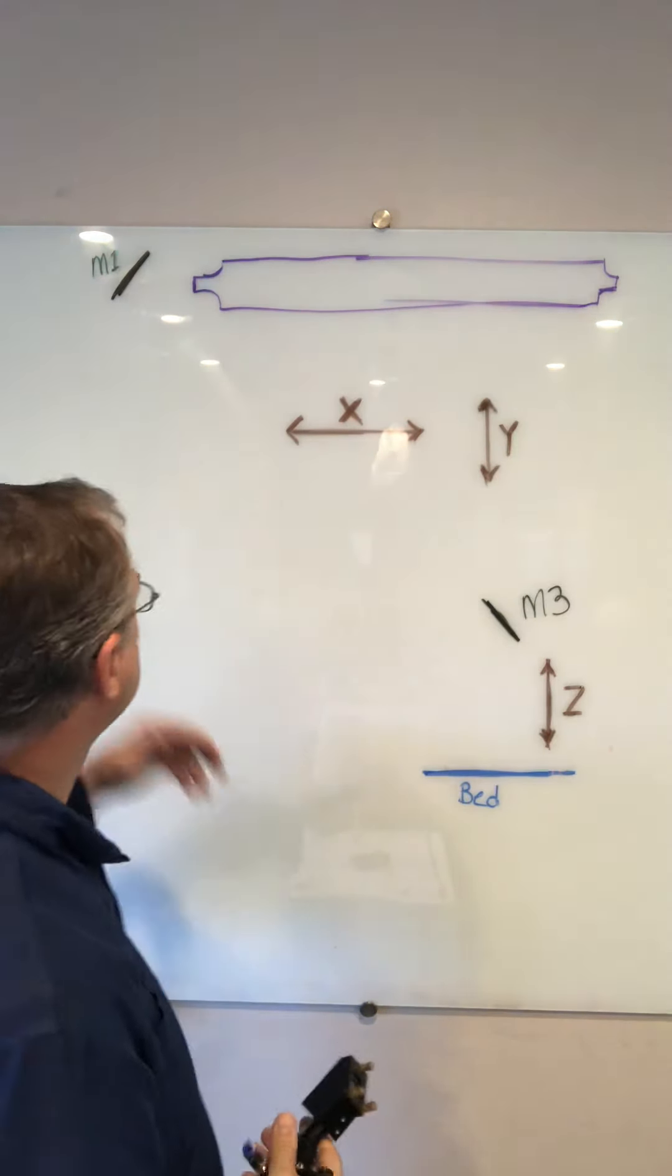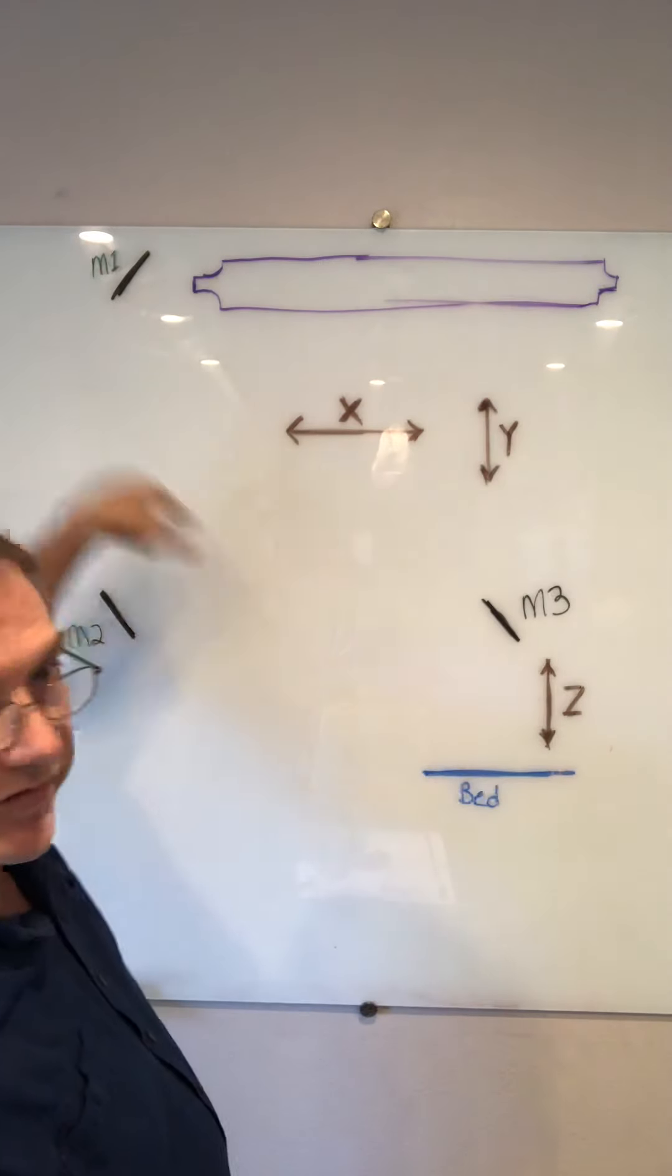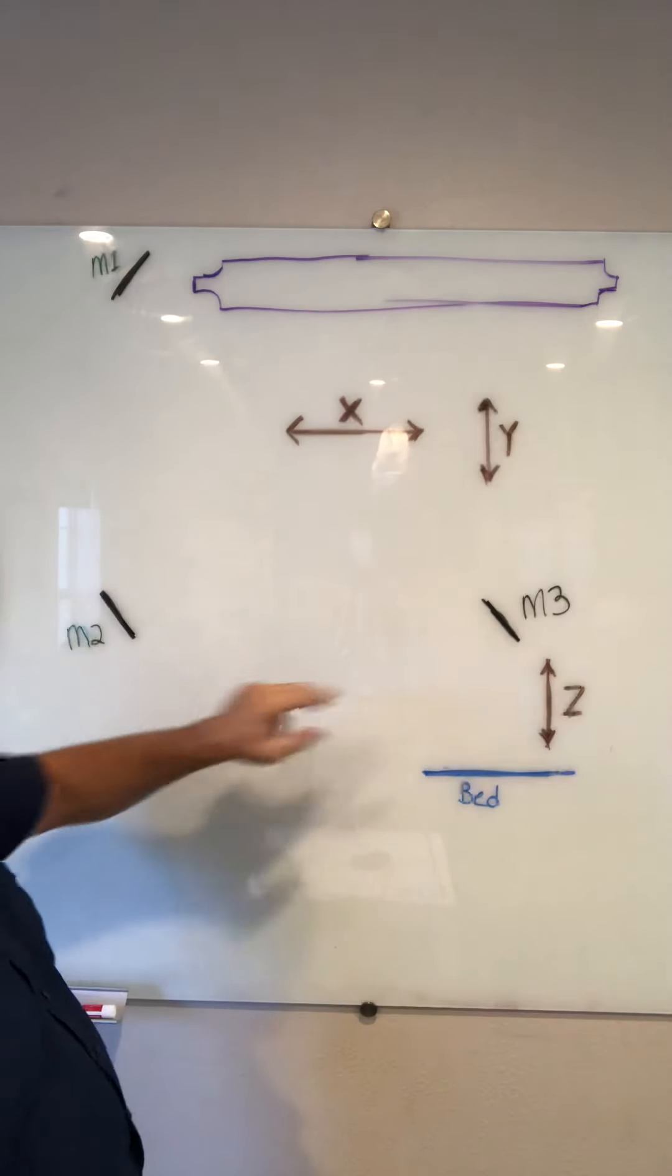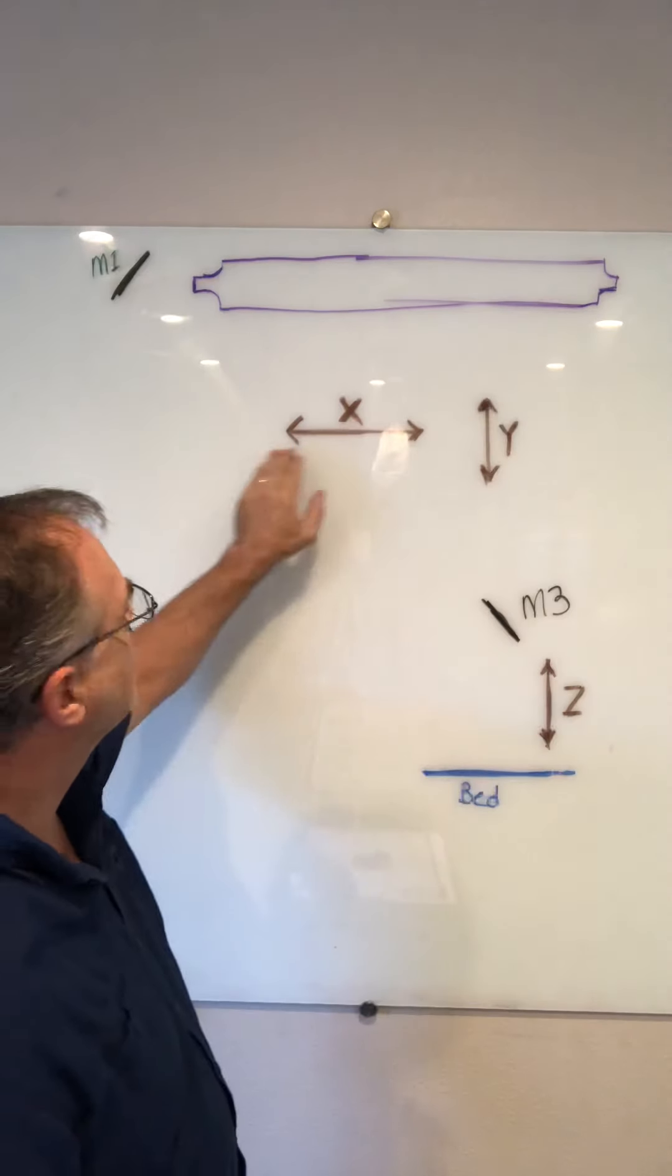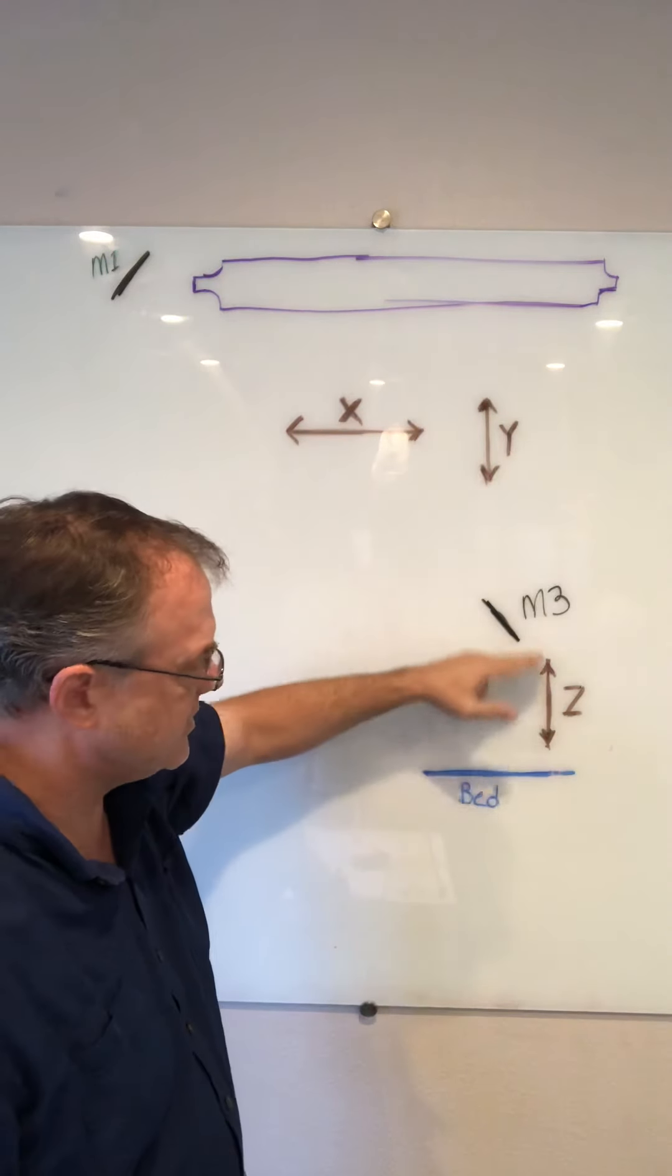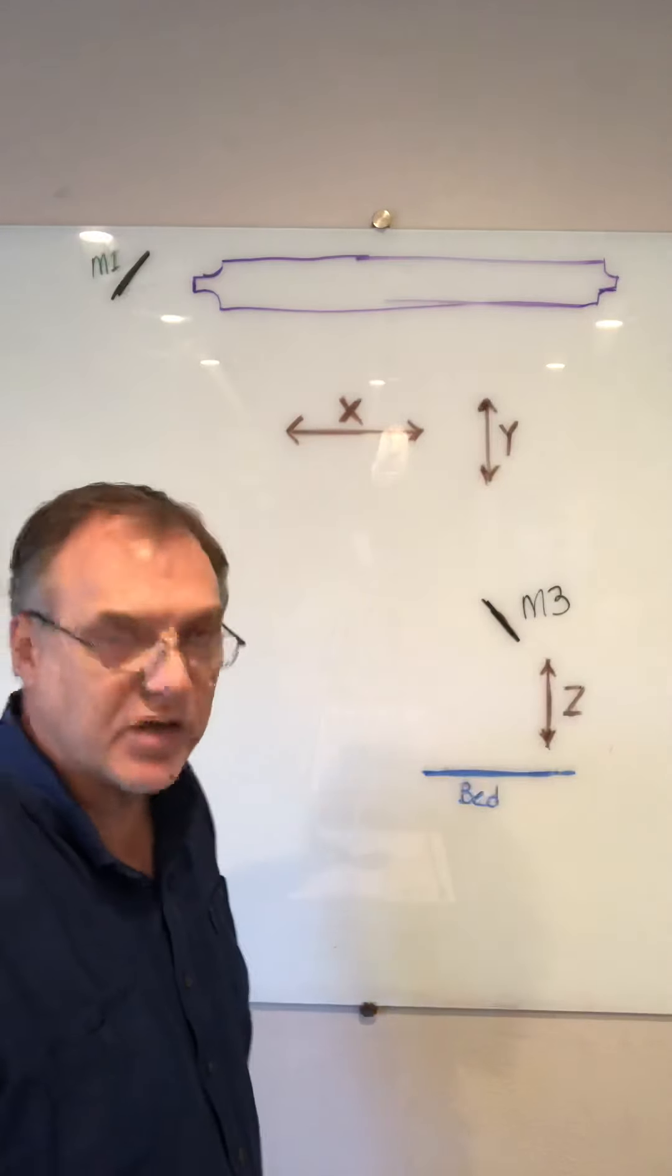Okay, so here I have shown on the machine basic layout: mirror one, mirror two, mirror three, X axis, Y axis, and then this represents the Z axis going down to the bed of your table.